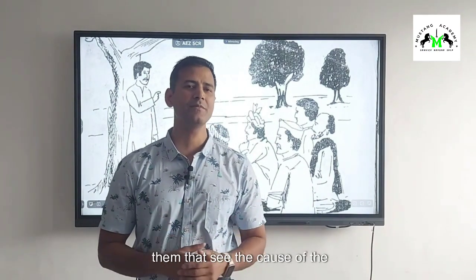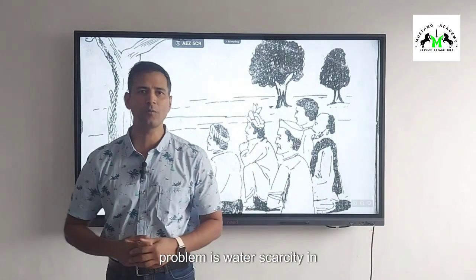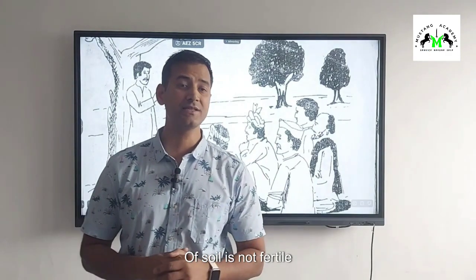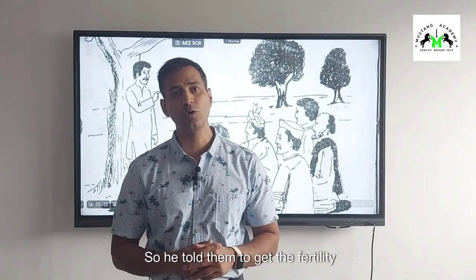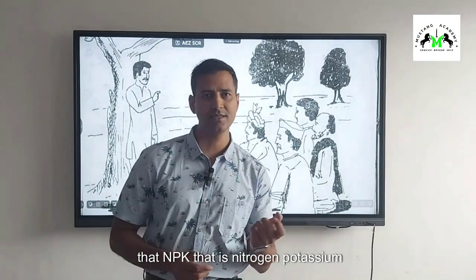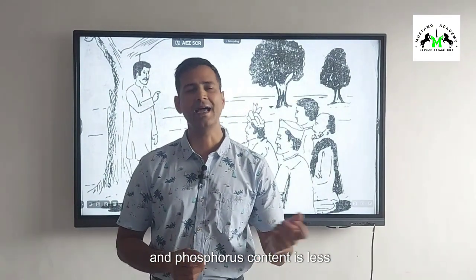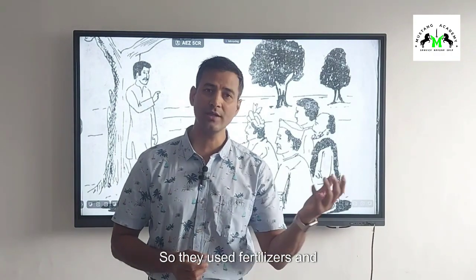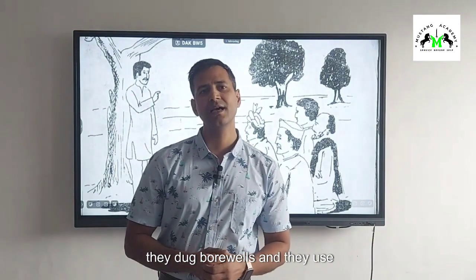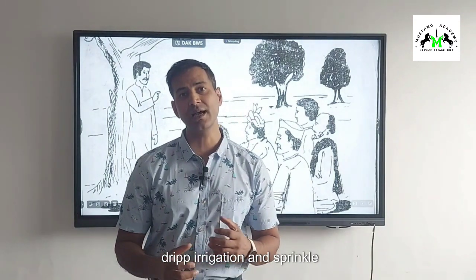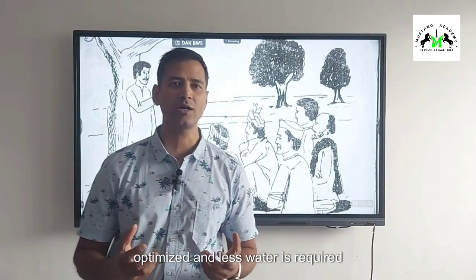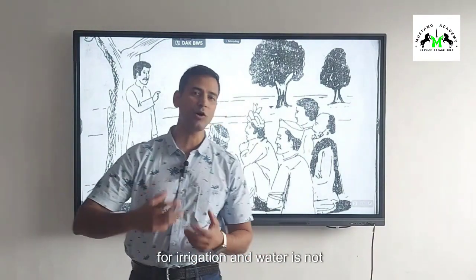So Ram gathered them and told them that the cause of the problem is water scarcity in the area and the soil is not fertile. He told them to get the soil fertility checked, and they found out that NPK — that is, nitrogen, potassium, and phosphorus content — is less. So they used fertilizers, and for water they dug bore wells and used drip irrigation.